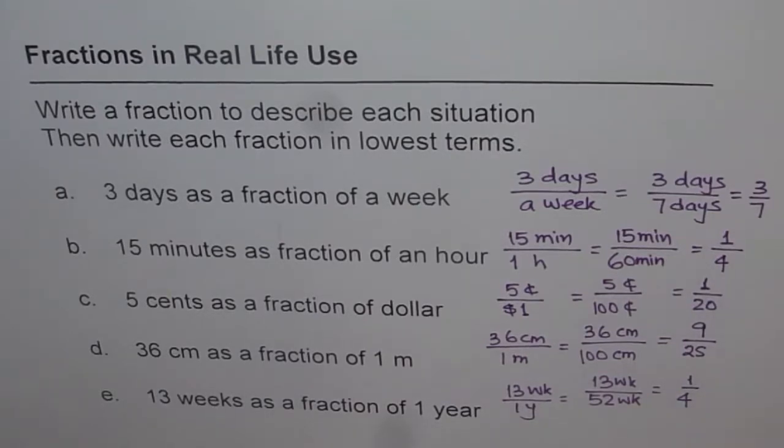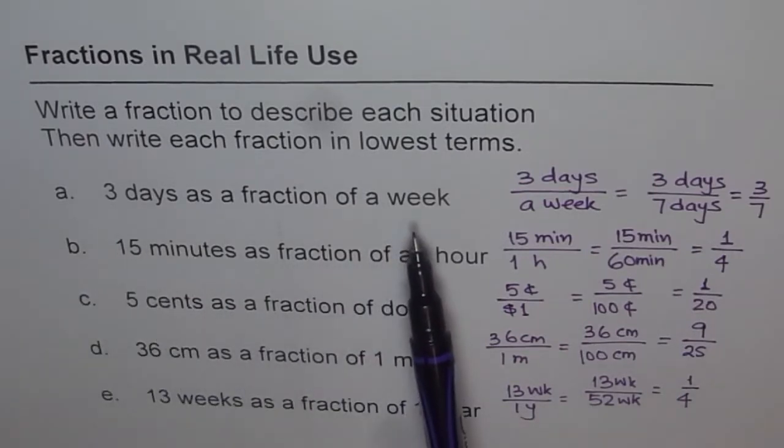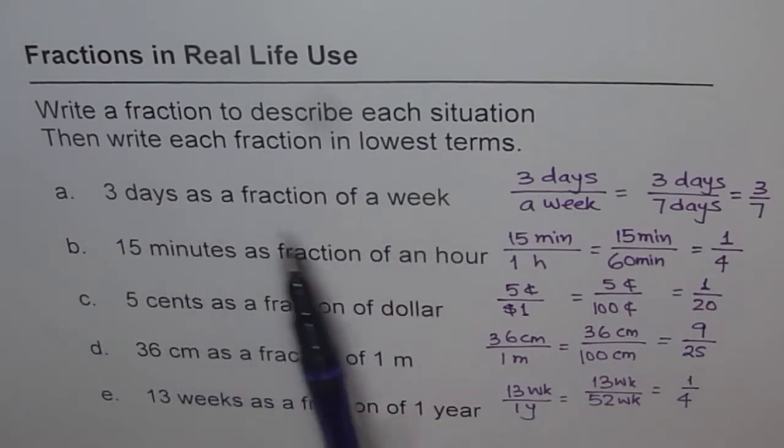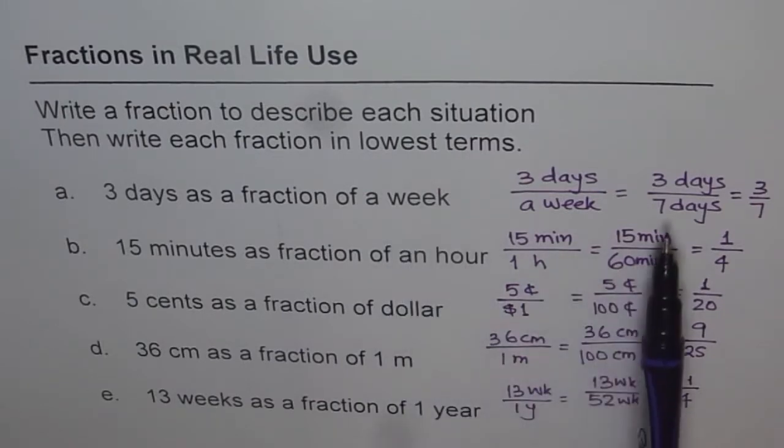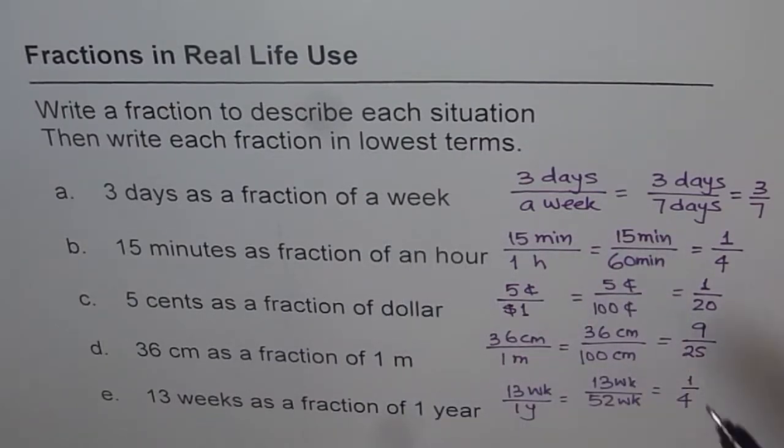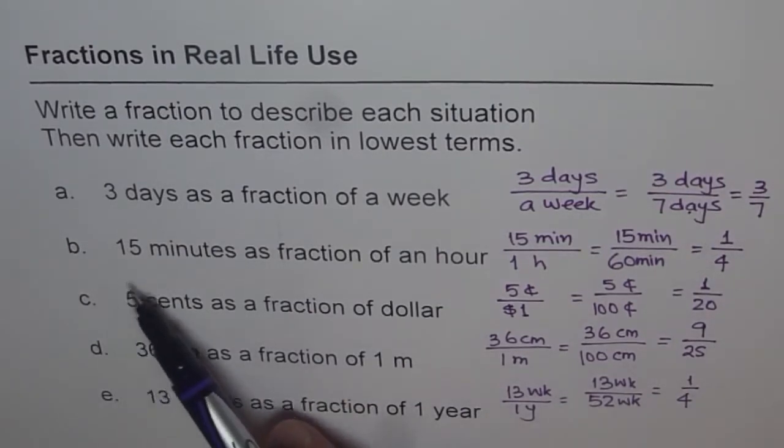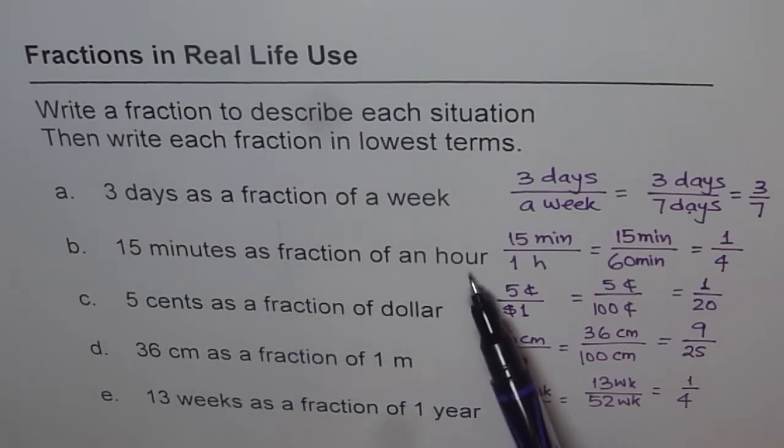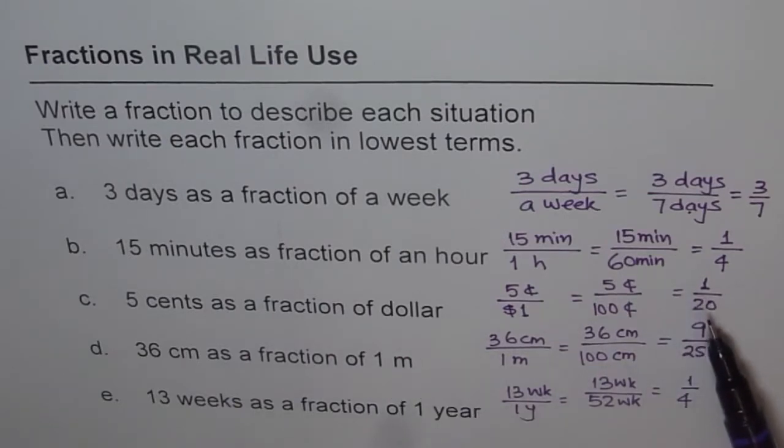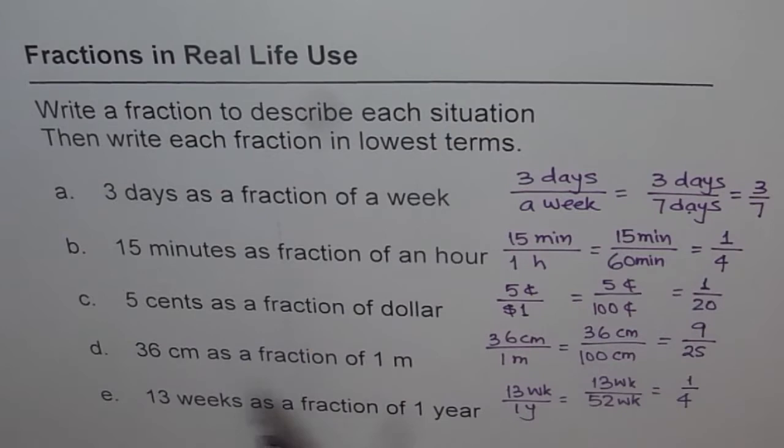Did you notice how we did all this? So when you are writing days into weeks, you should know how many days are there in a week - 7 days. Put it there. Now at this stage, you can cancel out days and days and you get 3 over 7. Minutes an hour. 15 minutes is quarter of an hour, that's what we get. 5 cents as a fraction of dollar, 1 20th, right? That's the value of your nickel. 36 centimeters as a fraction of a meter, 36 over 100 which could be reduced.